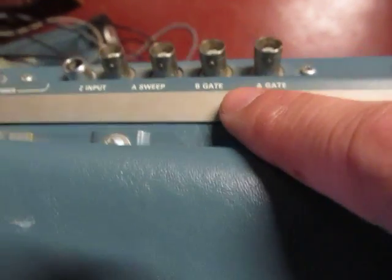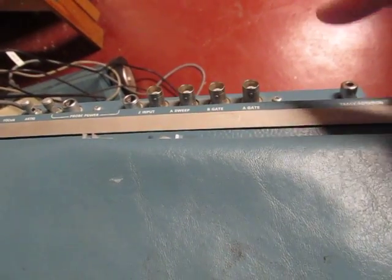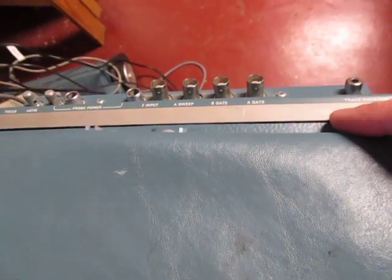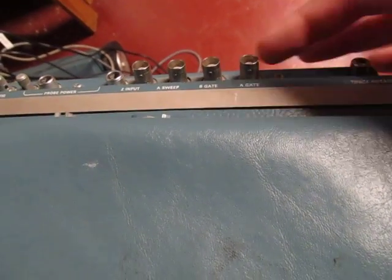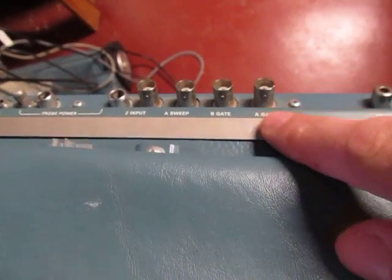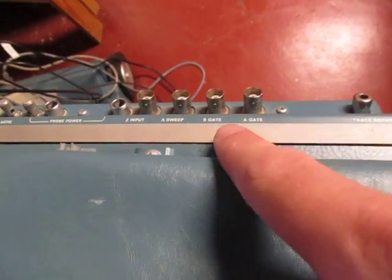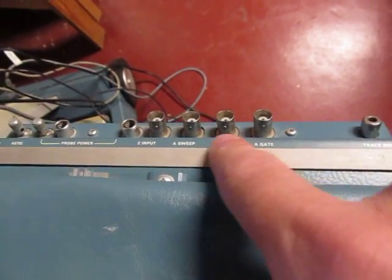There's also a B-gate and an A-gate. And what those are, those are outputs that go high when the sweep is active and go low when the sweep is retracing. Very rarely used, but they could be useful sometimes to synchronize your circuits and things like that to what the scope is doing or vice versa. So those are some of the examples on this old 485.